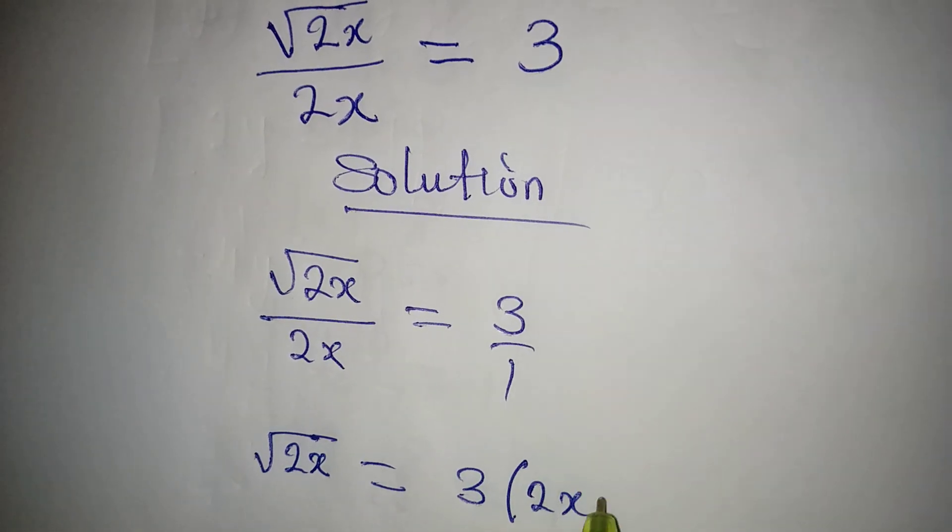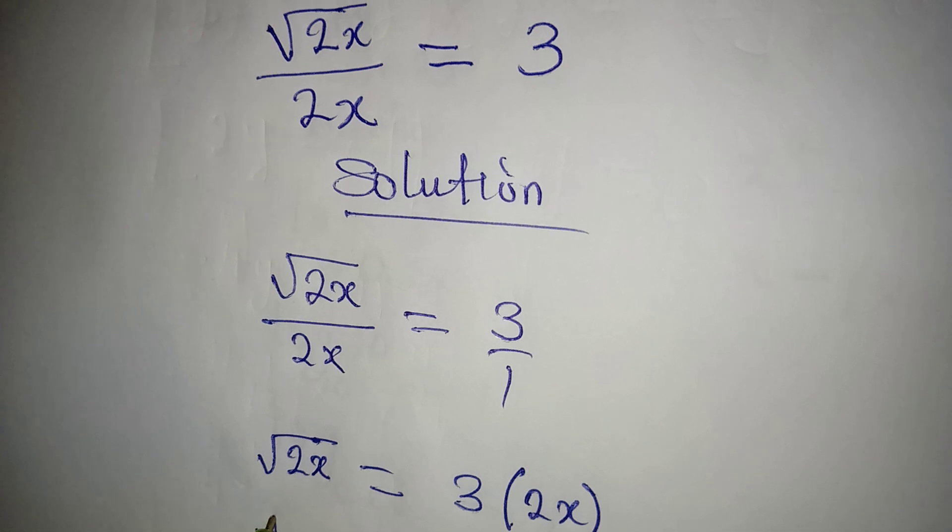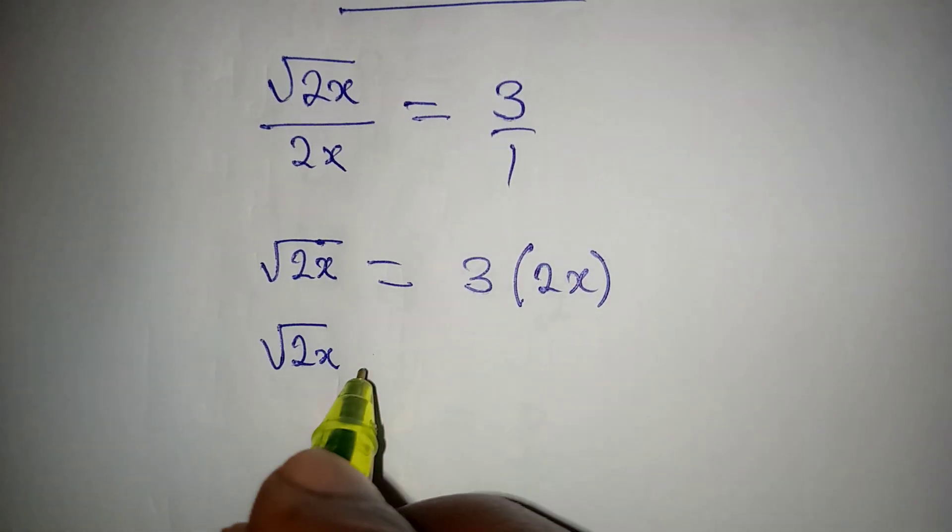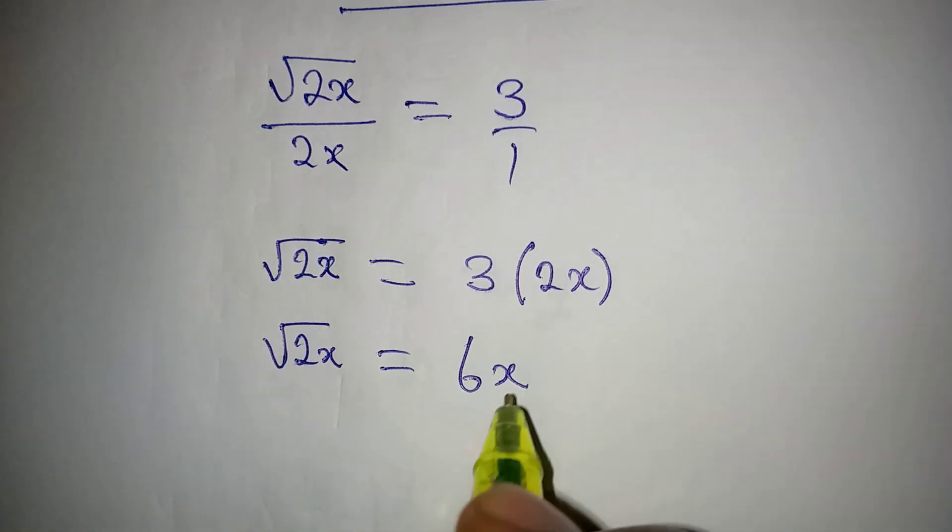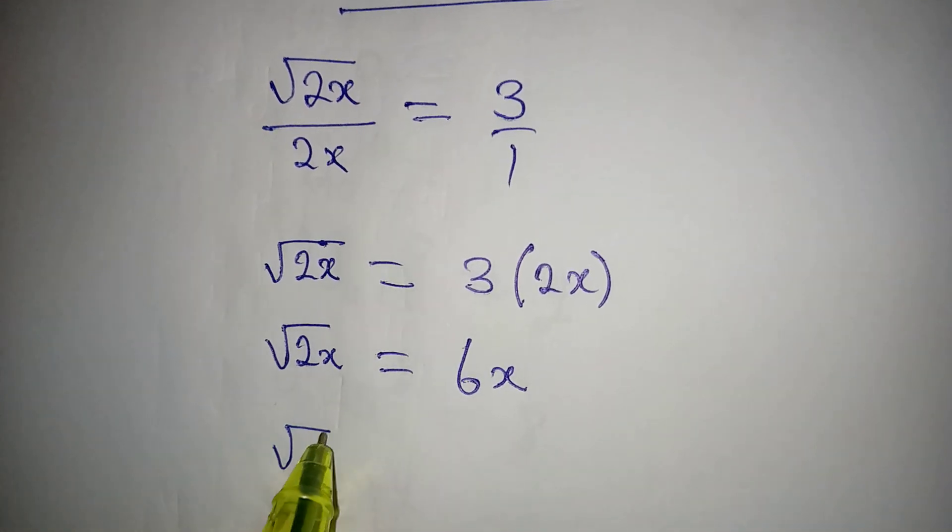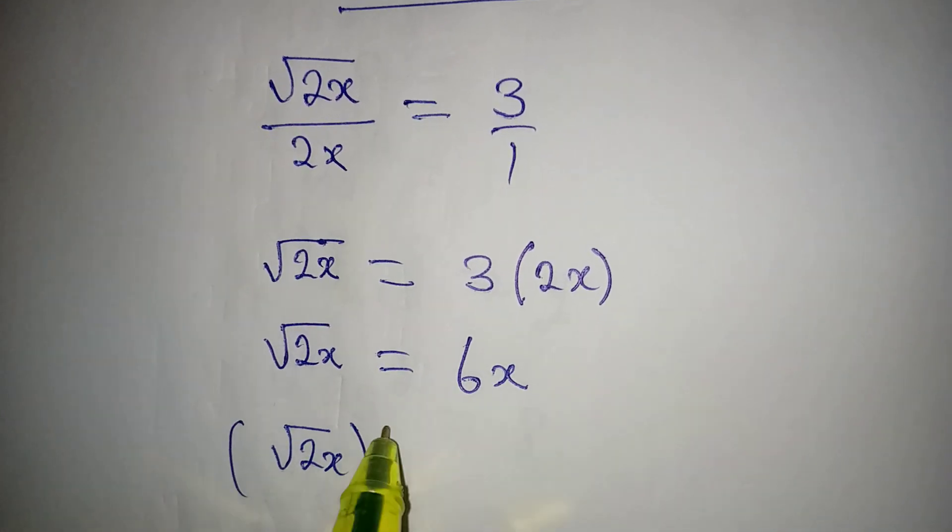Multiplied by 2x. This way we are going to have root 2x times root 2x equal to 6x. Now what do we do from here? We are going to square both sides, so we have square root of 2x squared.